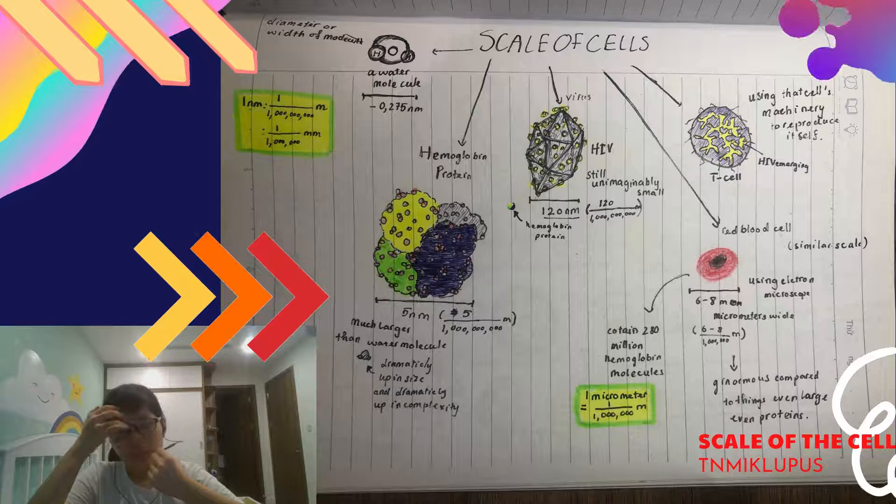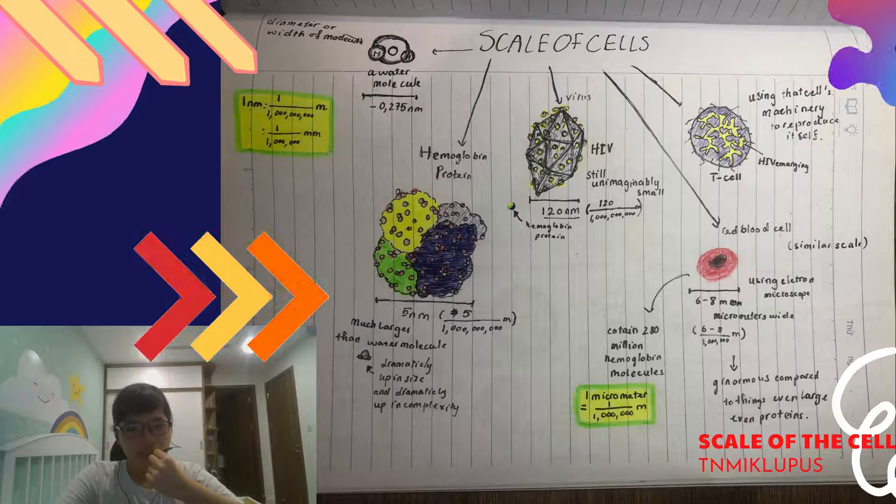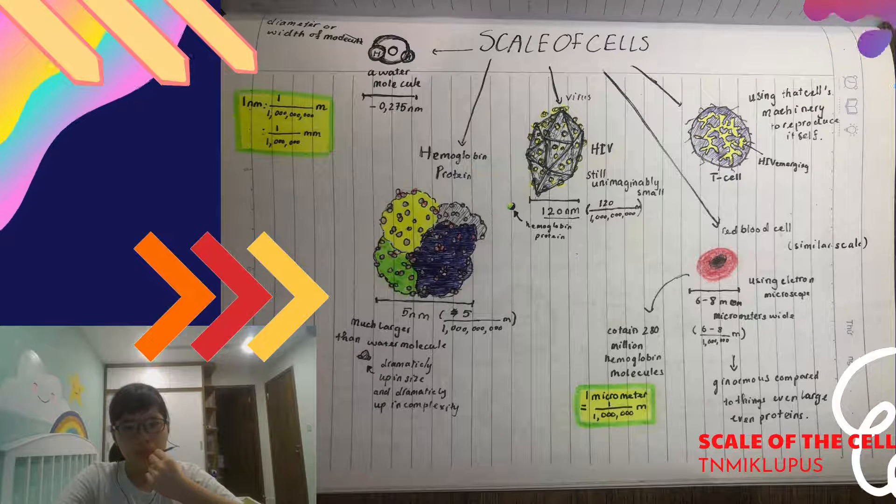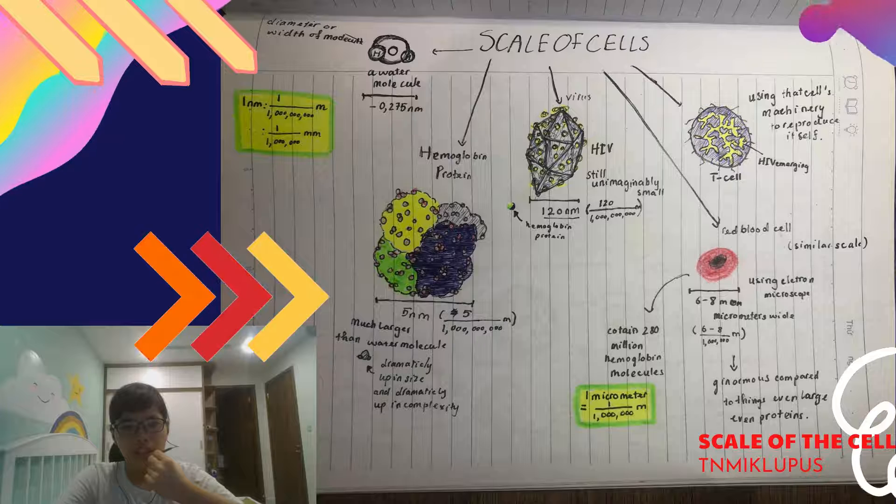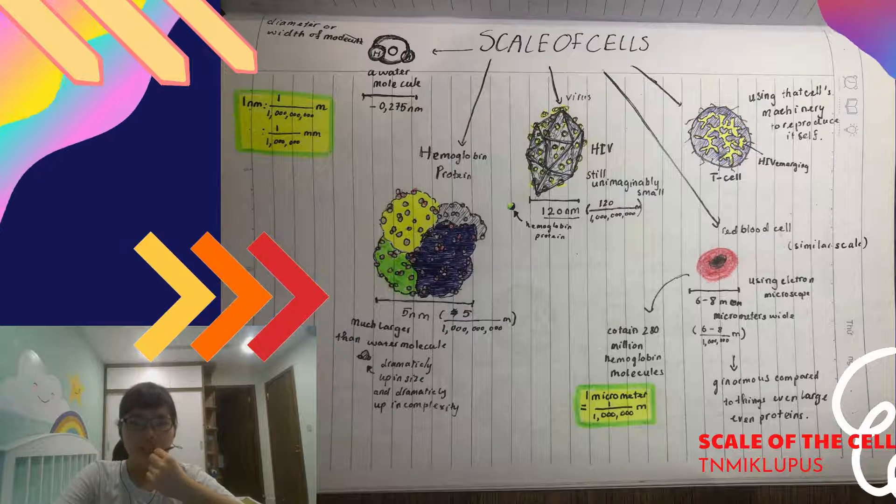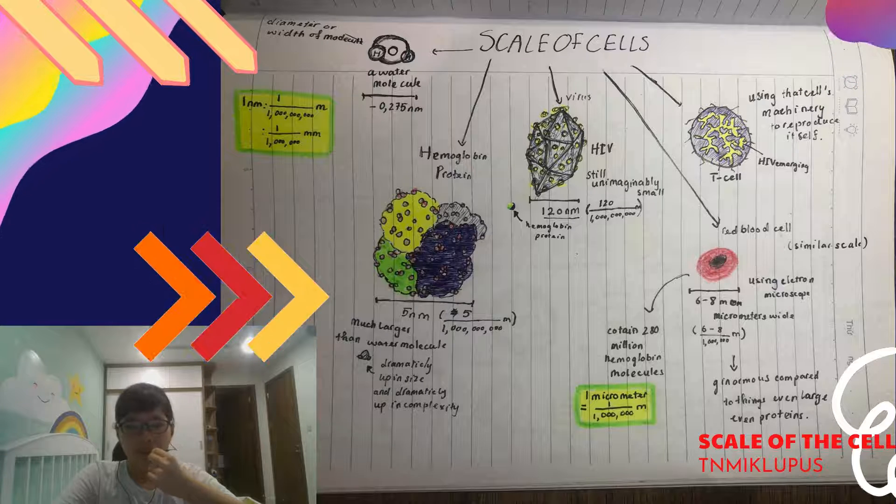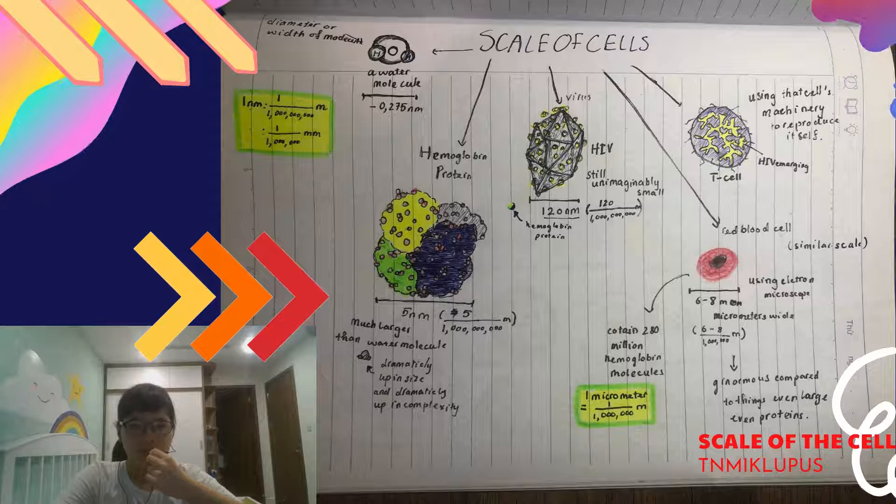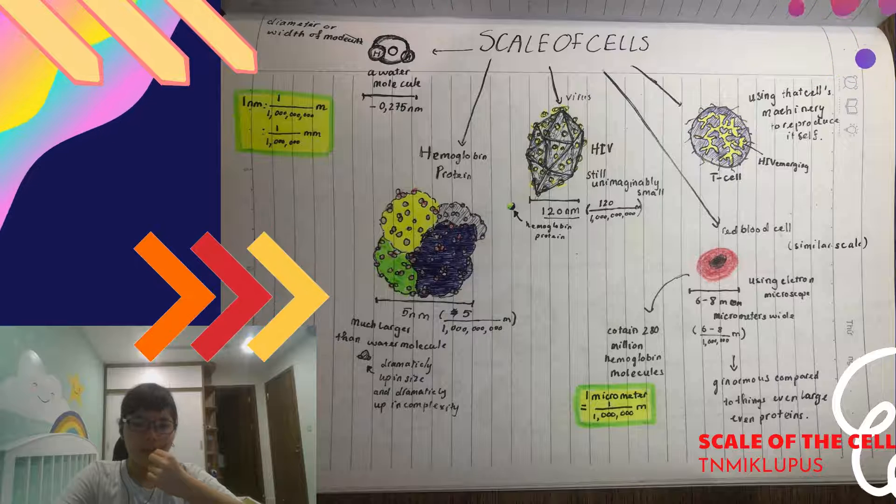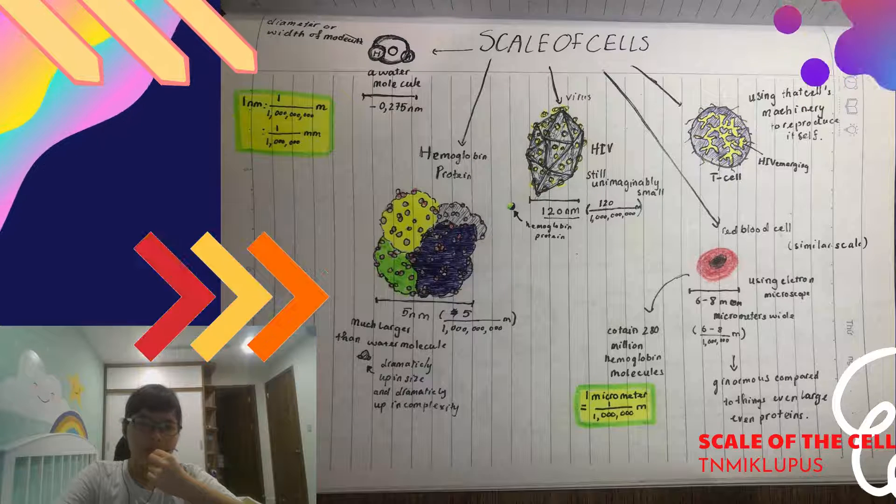On this first scale, this is my drawing of a water molecule. You have oxygen here between two hydrogen molecules and this is going to be roughly 0.275 nanometers. Let me explain a bit. One nanometer is a billionth of a meter.